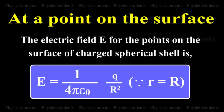Case 2: At a point on the surface. The electric field E for the points on the surface of the charged spherical shell is, since r equals R, E equals 1 by 4πε₀ times q by R².